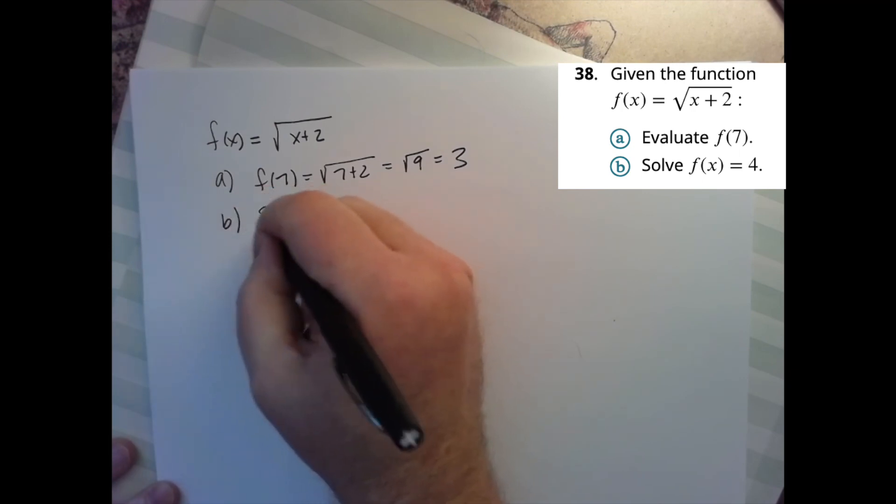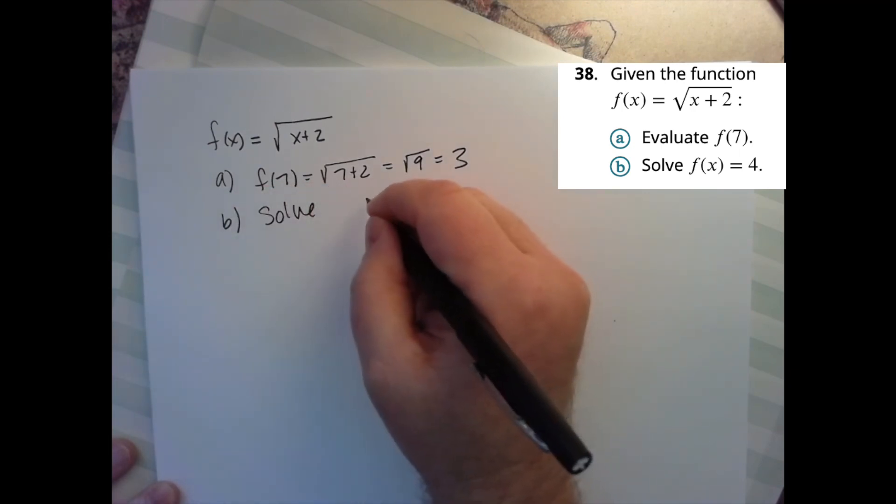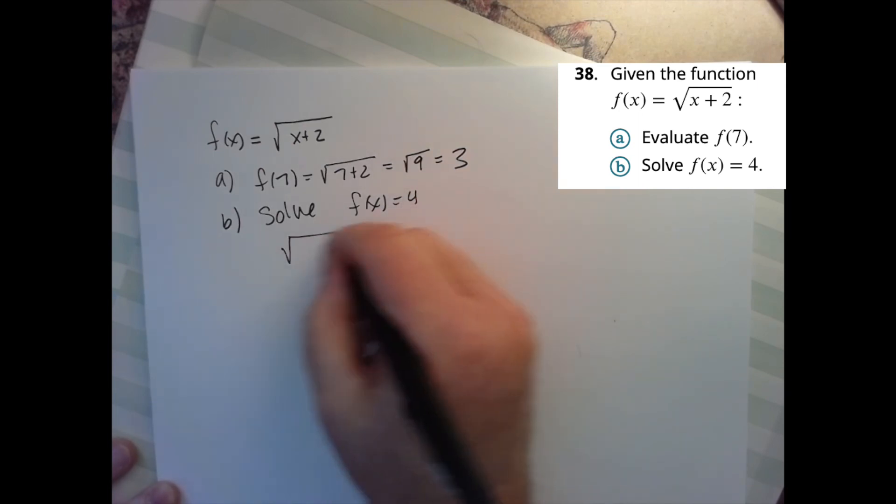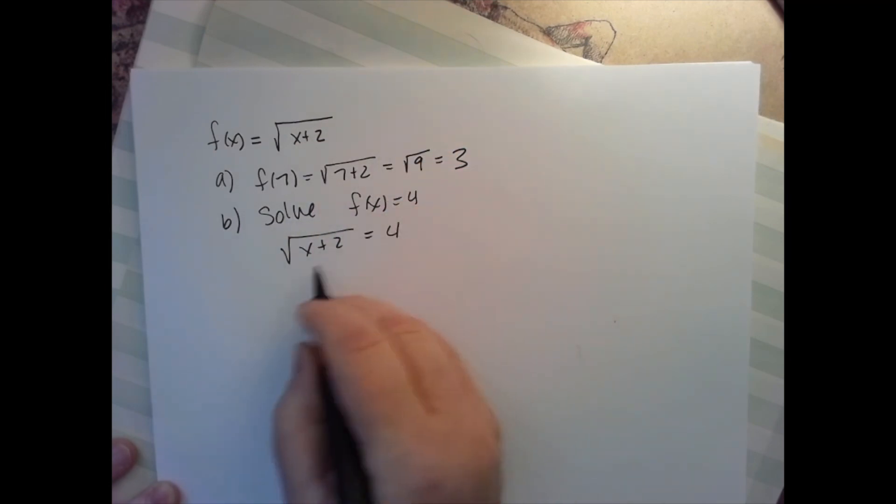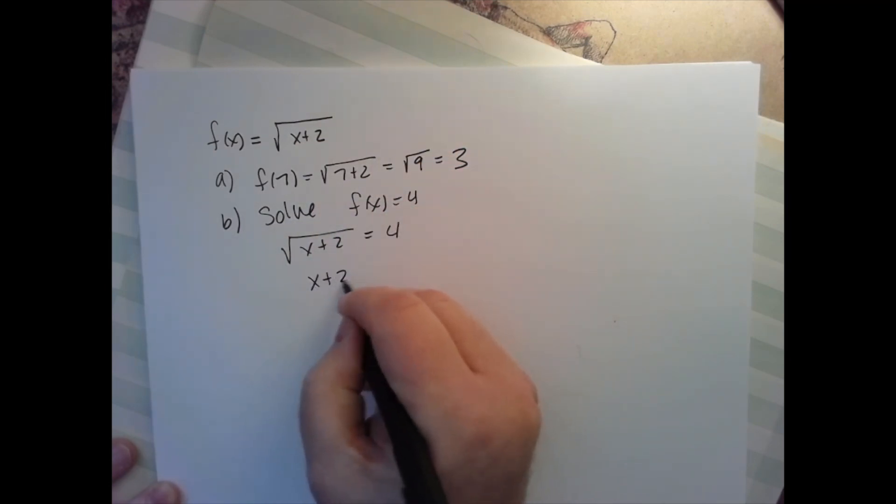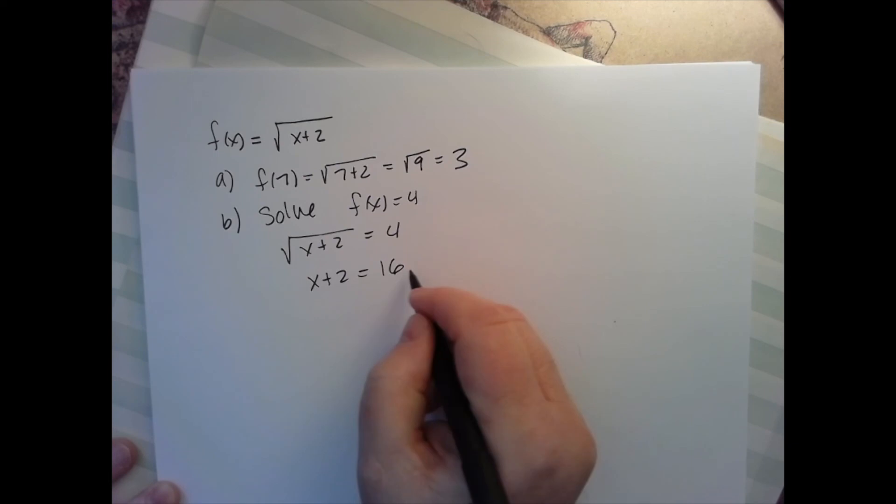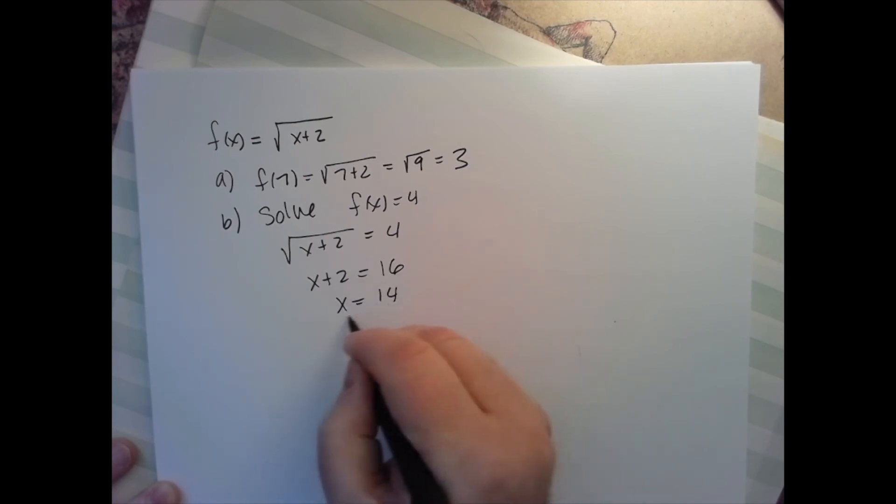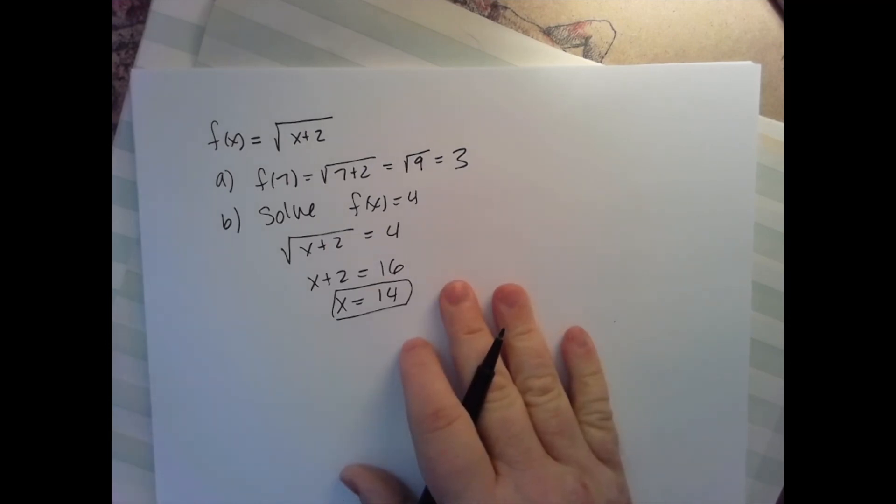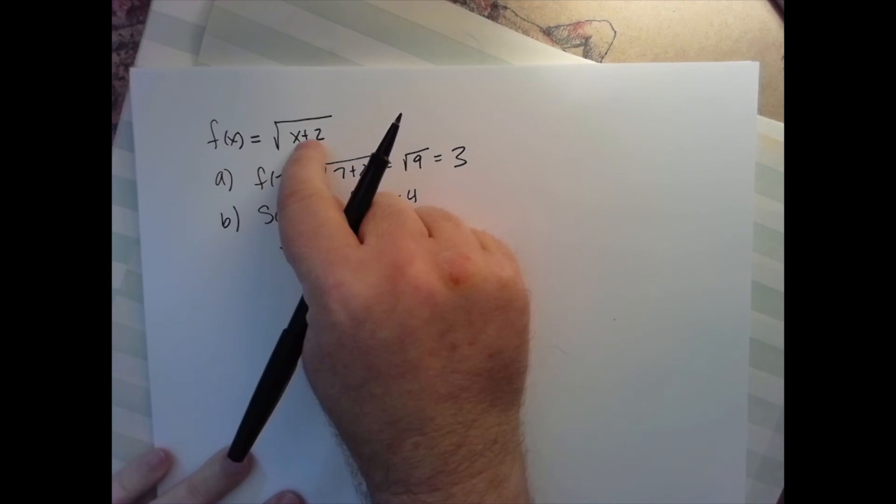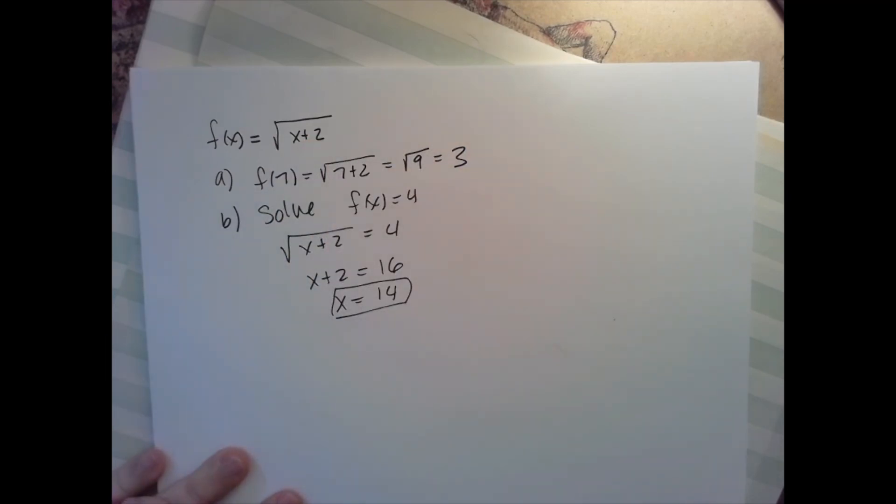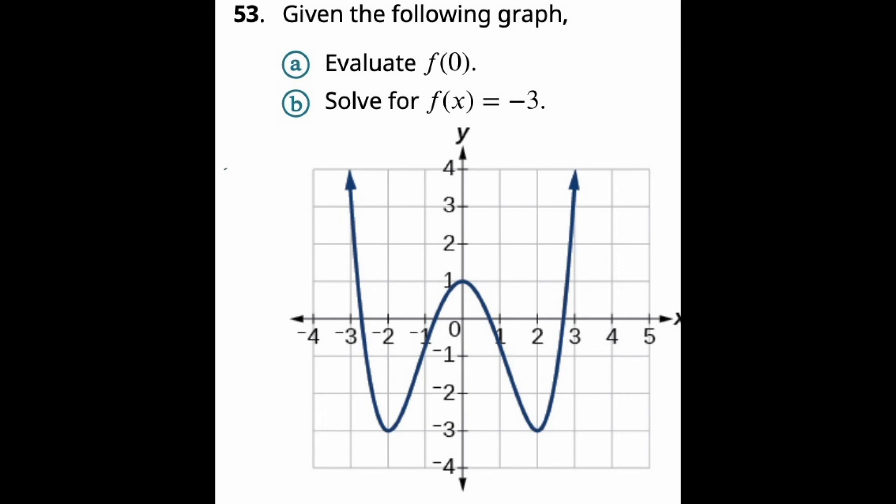And then b is solve f(x) equals four. So we just plug that in. Set it equal to four because I'm just replacing f with that. Square both sides. Subtract two. And we have our solution. Now, anytime you square a square root, good idea to go back and check to make sure it works. 16, put that in there. Yeah, you get 14 plus two is 16. You get eight.